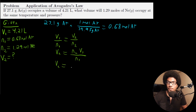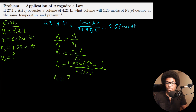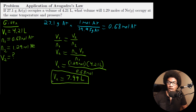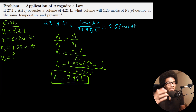Plugging everything in: the final number of moles is 1.29 moles, the initial volume was 4.21 liters, and the initial number of moles for argon was 0.68 moles. The moles cancel out, and you get a final volume of 7.99 liters. Quick sanity check: we're increasing the number of moles, so according to Avogadro's Law, the volume should increase accordingly — and it does, going from 4.21 to 7.99 liters.